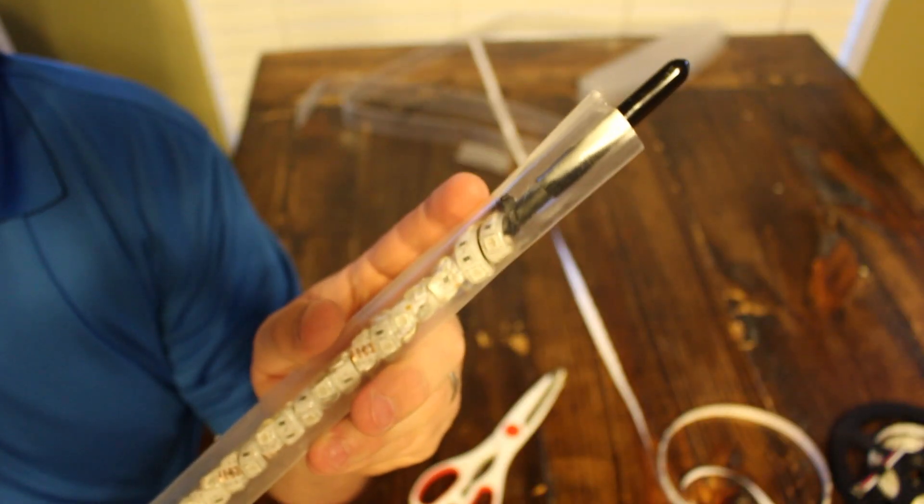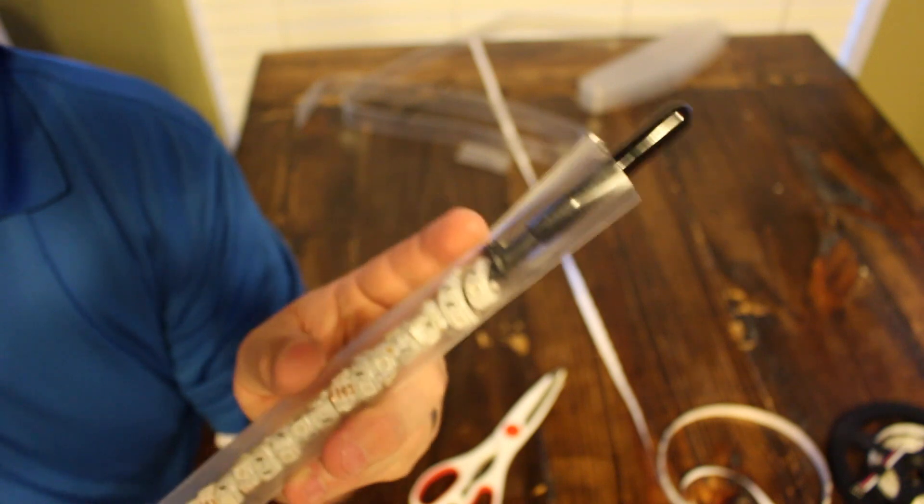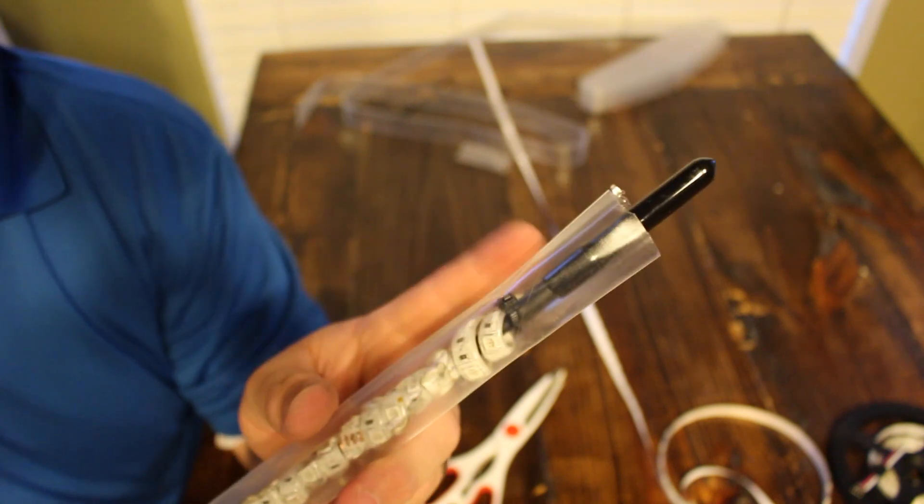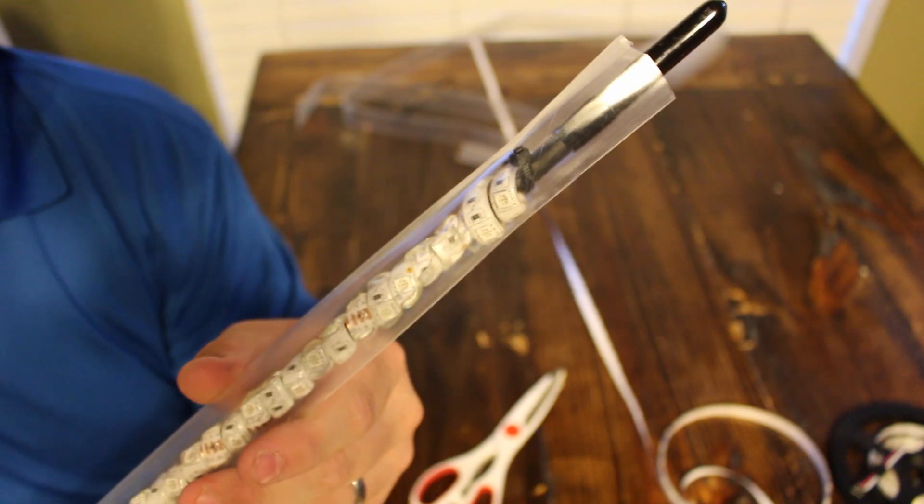Last time I got a one inch regular size heat shrink. This time I got a three quarters of an inch. So it's going to be tighter along the antenna mass once we heat it up with the heat gun.